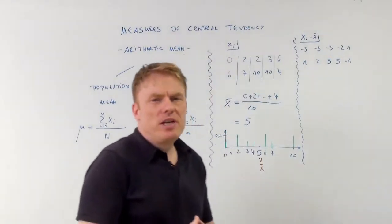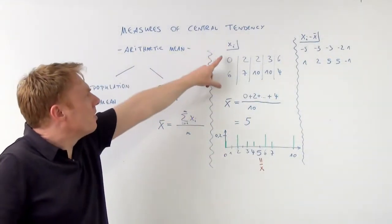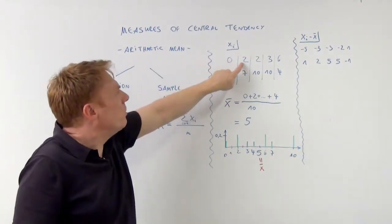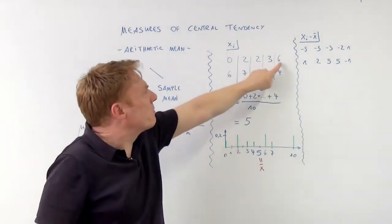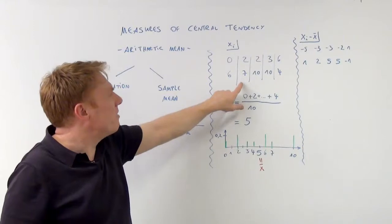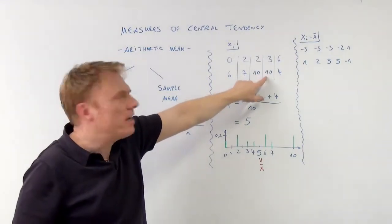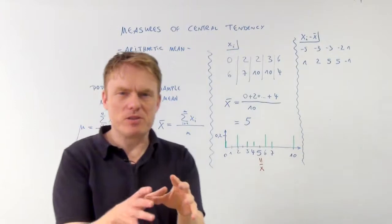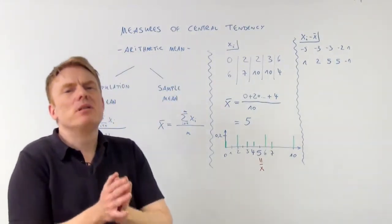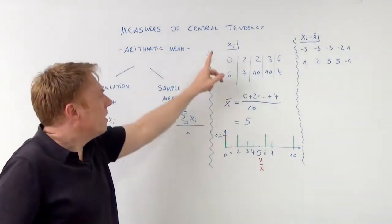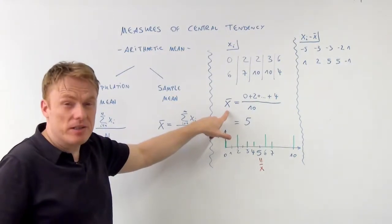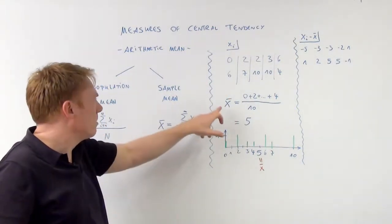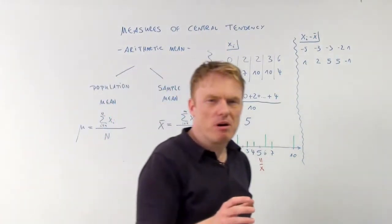Taking a look at an example: x1, x2, x3, x4, x5, x6, x7, x8, x9, and x10 — which means 10 values. You've got a sample of 10 values and you need to calculate. If it's a sample, it's x-bar. This value x-bar.